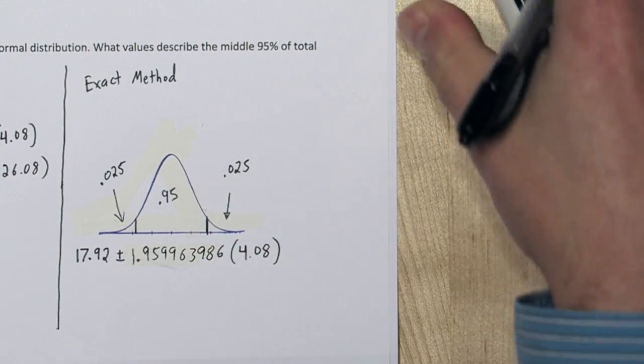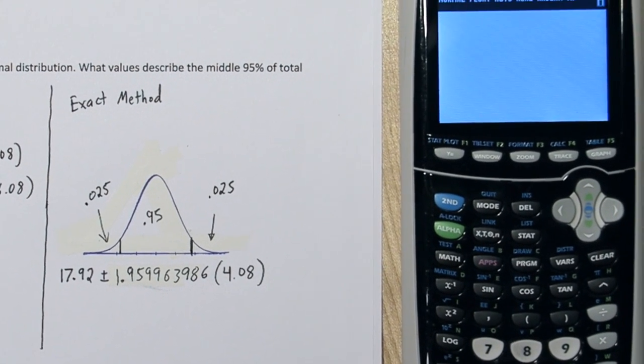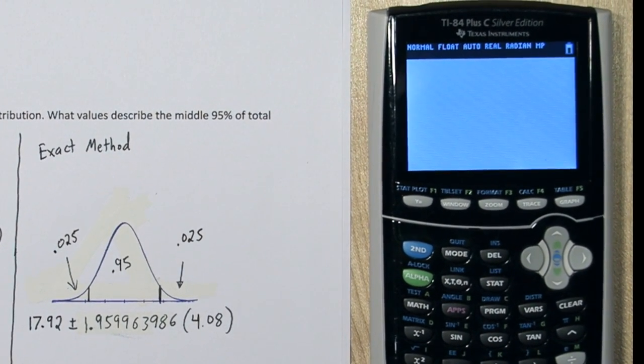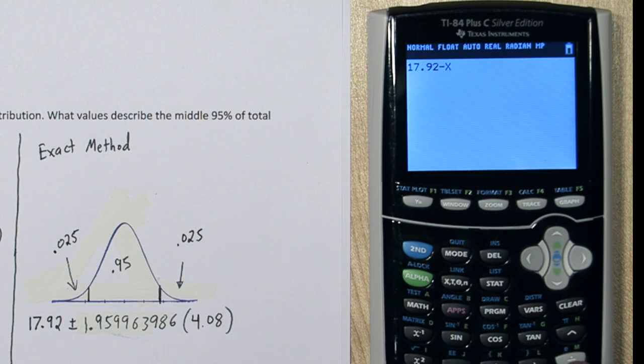And then I'll have my exact interval that cuts off the middle 95% of total pumpkin heights. So since I stored that value on my calculator as x, I can take my mean and subtract x standard deviations.